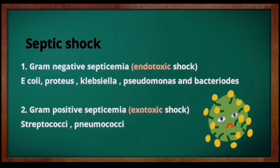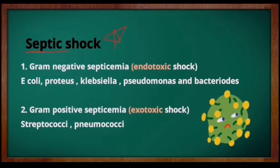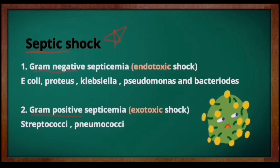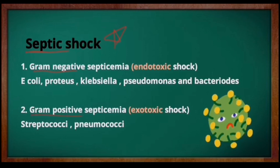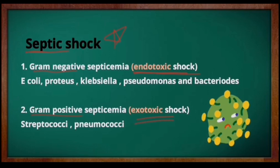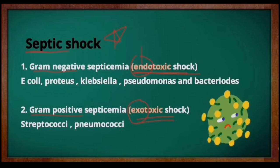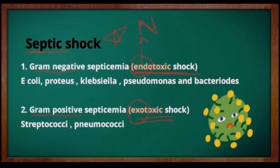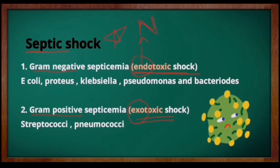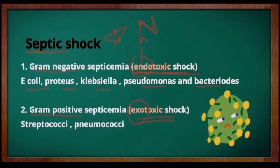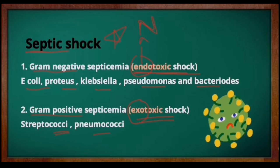Septic shock is very important. It can be caused by a gram-negative organism — called endotoxic shock — or a gram-positive organism — called exotoxic shock. Remember: N for gram-negative → endotoxic. Gram-negative organisms include E. coli, Proteus, Klebsiella, Pseudomonas, and Bacteroides. Gram-positive organisms include Streptococci and Pneumococci.